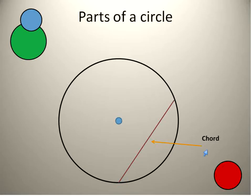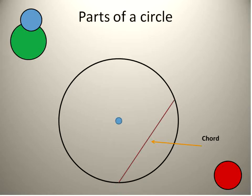The longest possible chord would go straight through the center, and that would be the maximum distance. But any chord is basically a line that touches from one edge of the circle to the other.